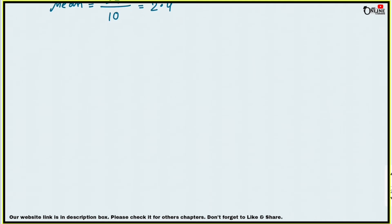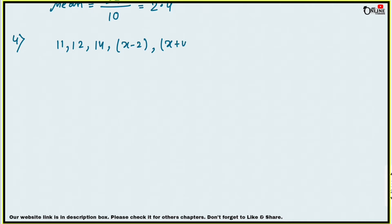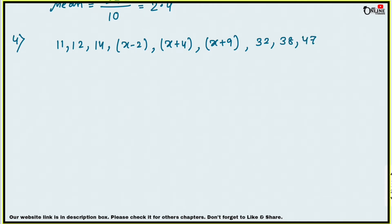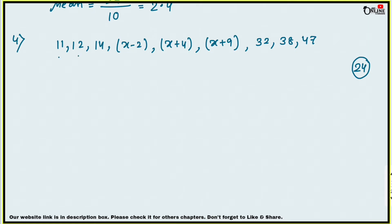Now next, sum number 4: the median of the observations 11, 12, 12, 14, x−2, x+4, x+9, 32, 38 and 47 arranged in ascending order is 24. Find the value of x and hence find the mean. There are 9 terms, so n equal to 9, which is odd.